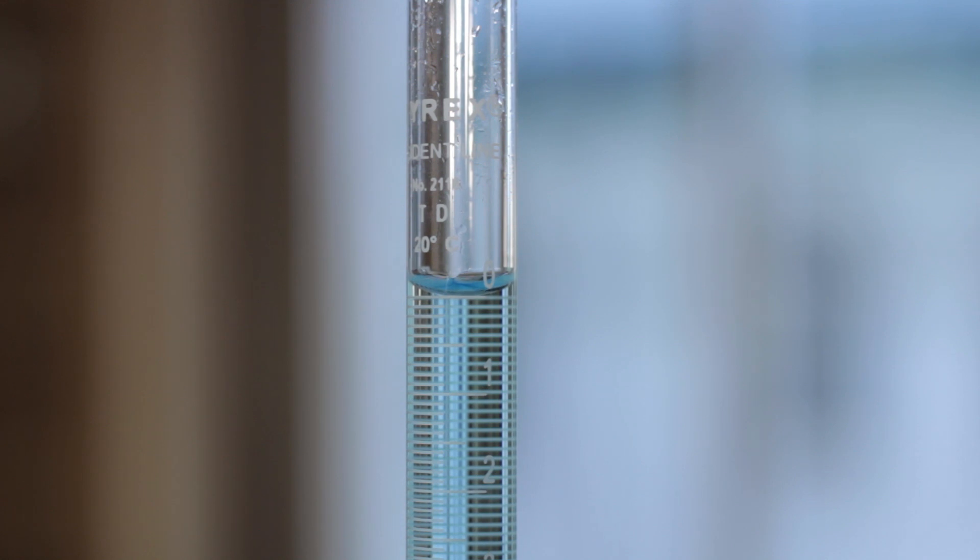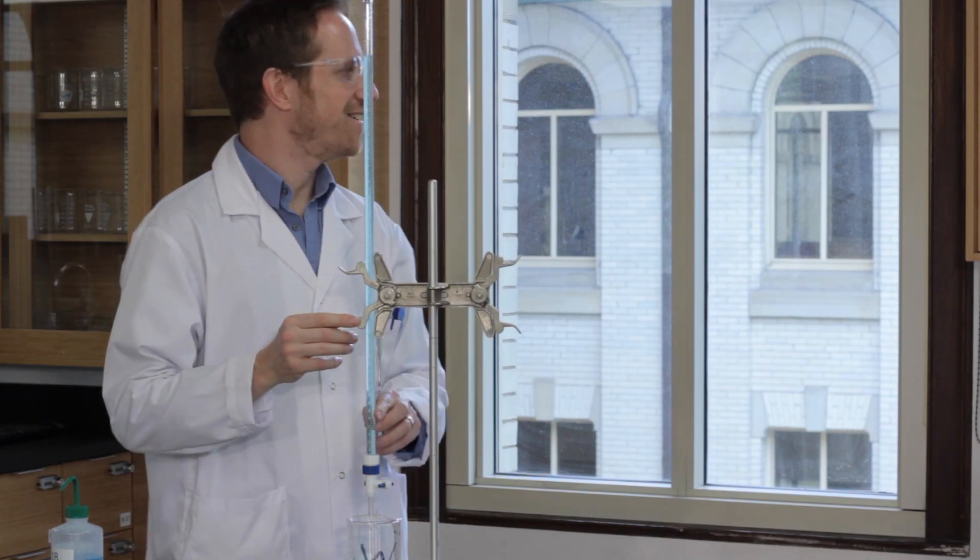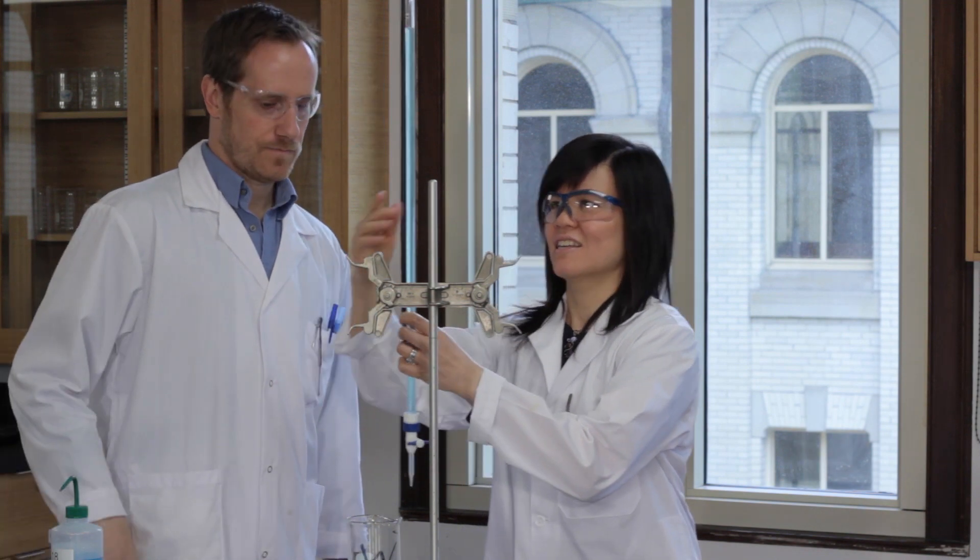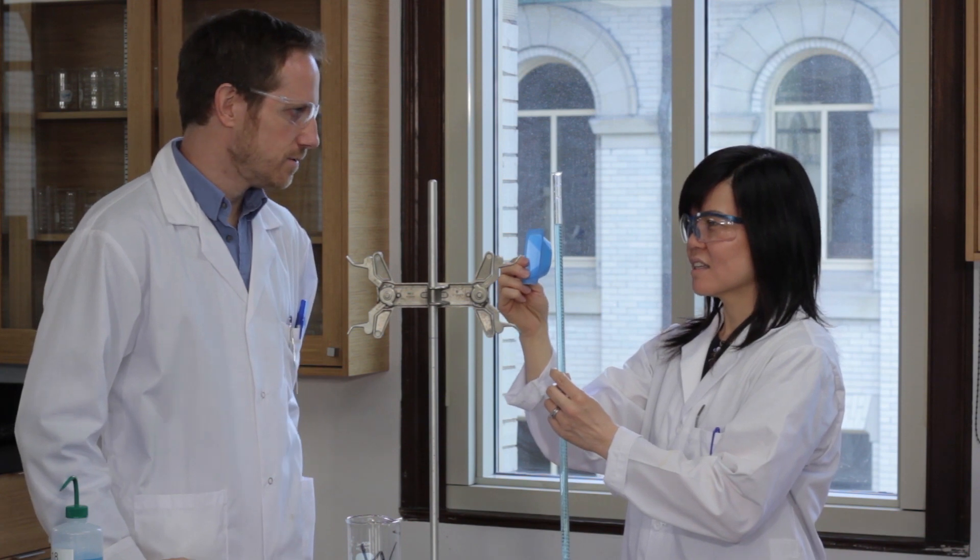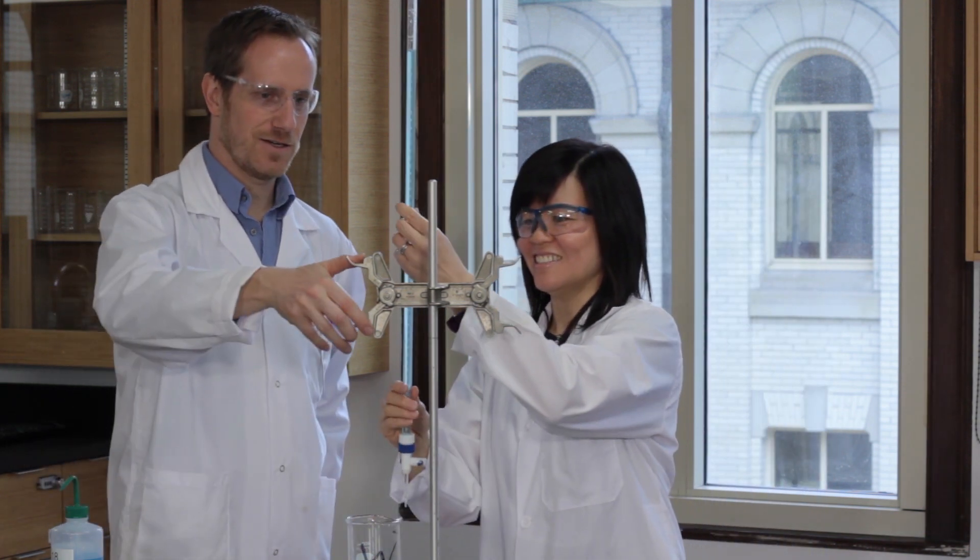Carefully read the level of the titrate in the burette to two decimal places. It's okay if the meniscus is not at the zero mark. Record the initial burette reading.